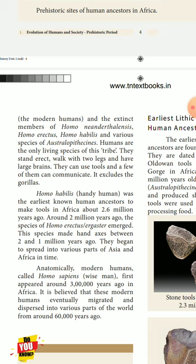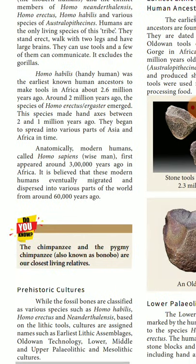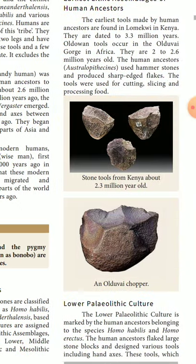Homo erectus began to spread into various parts of Asia and Africa over time. Modern humans are called Homo sapiens. It is believed that these modern humans eventually migrated and dispersed into various parts of the world from around 60,000 years ago. Homo sapiens emerged around 3 lakh (300,000) years ago.